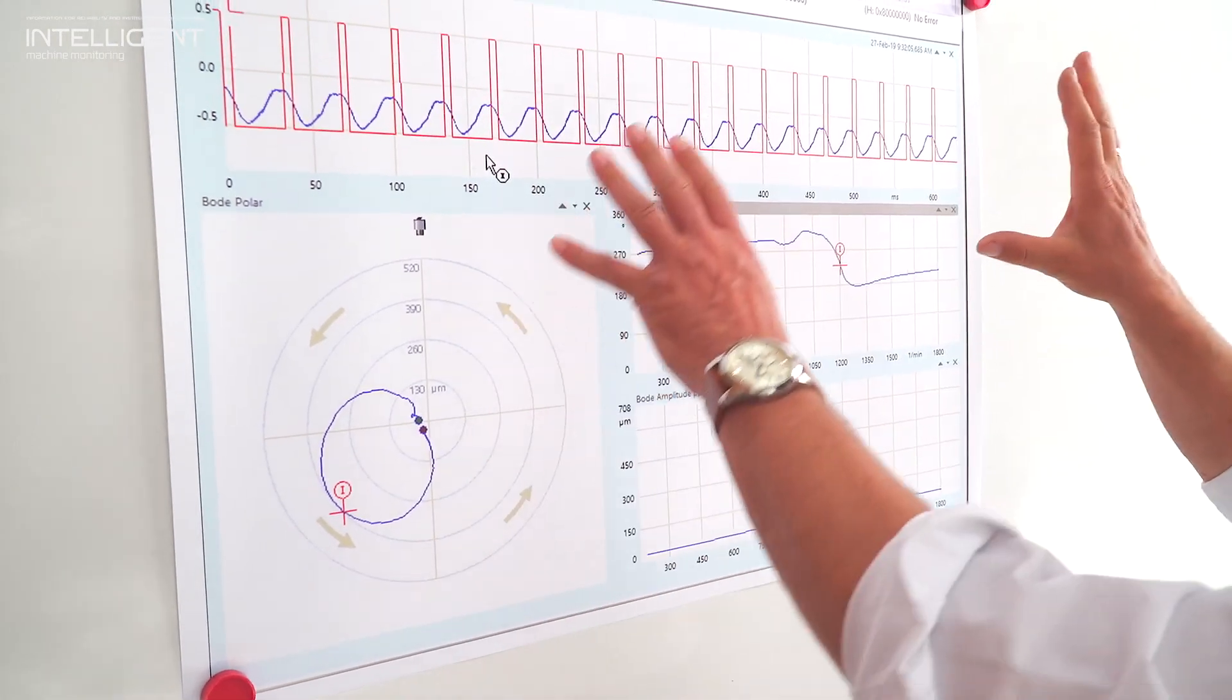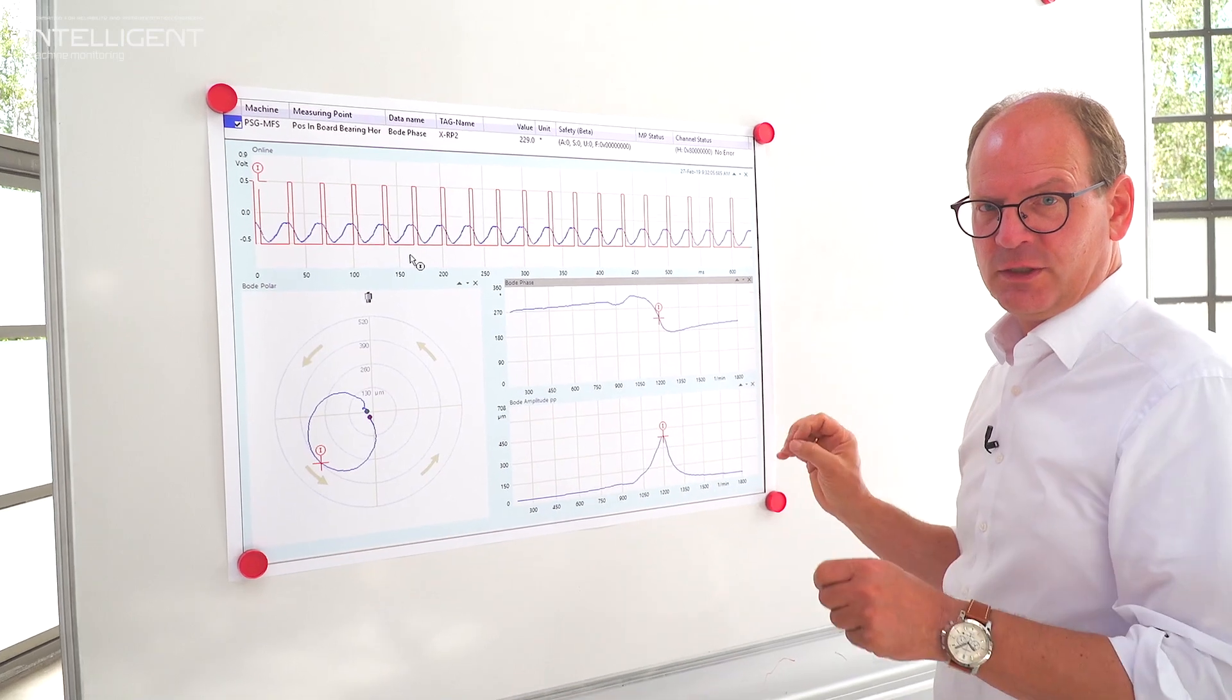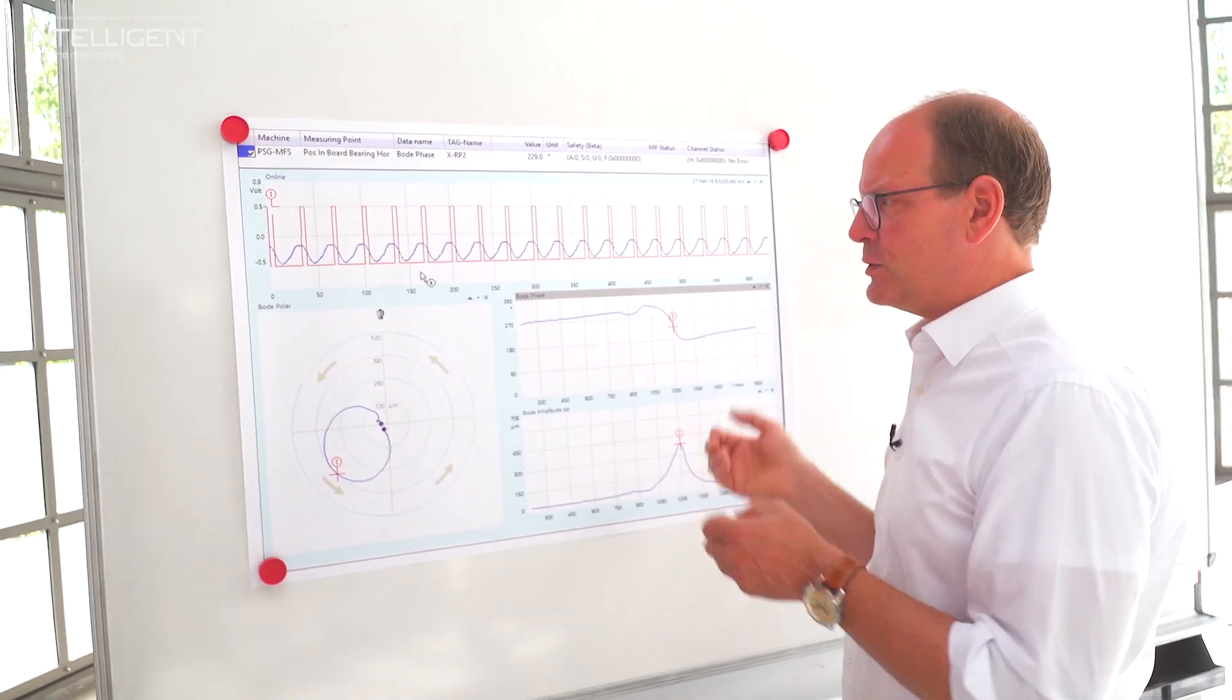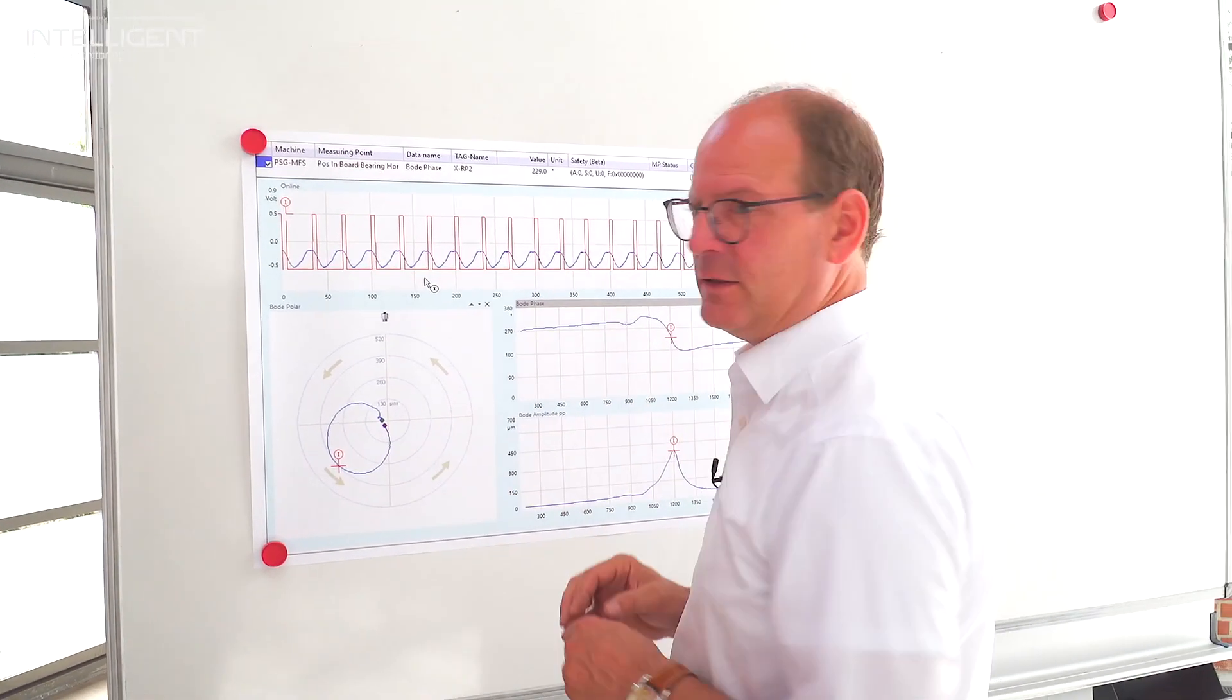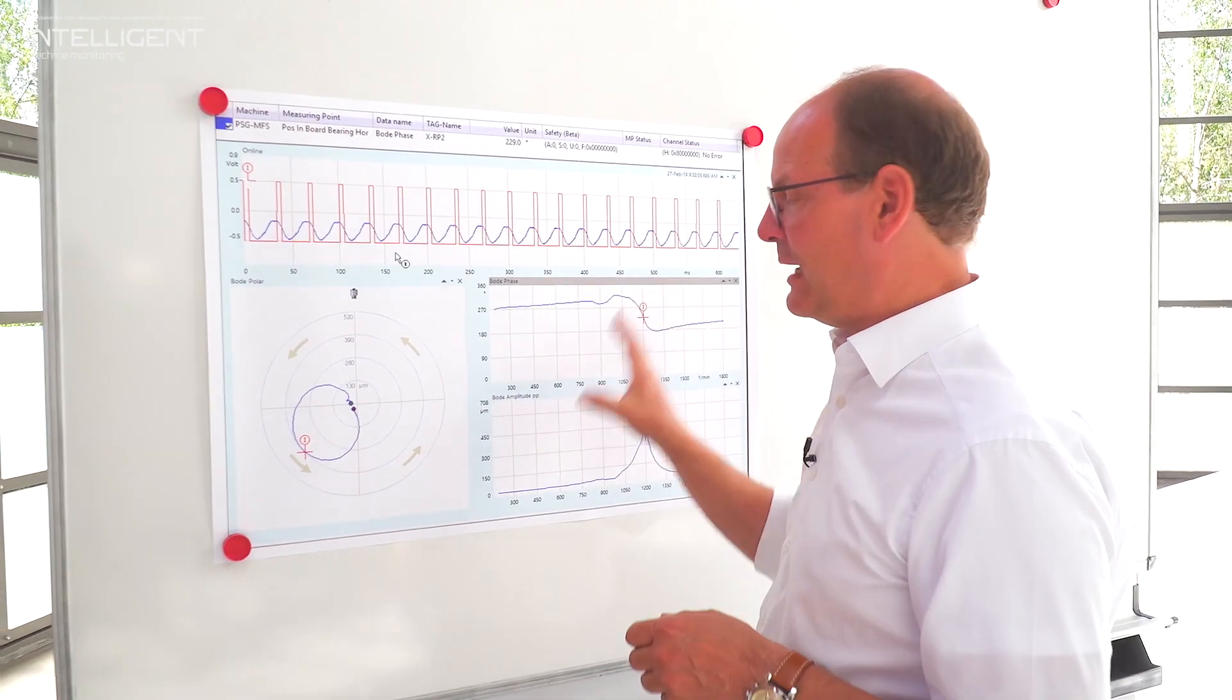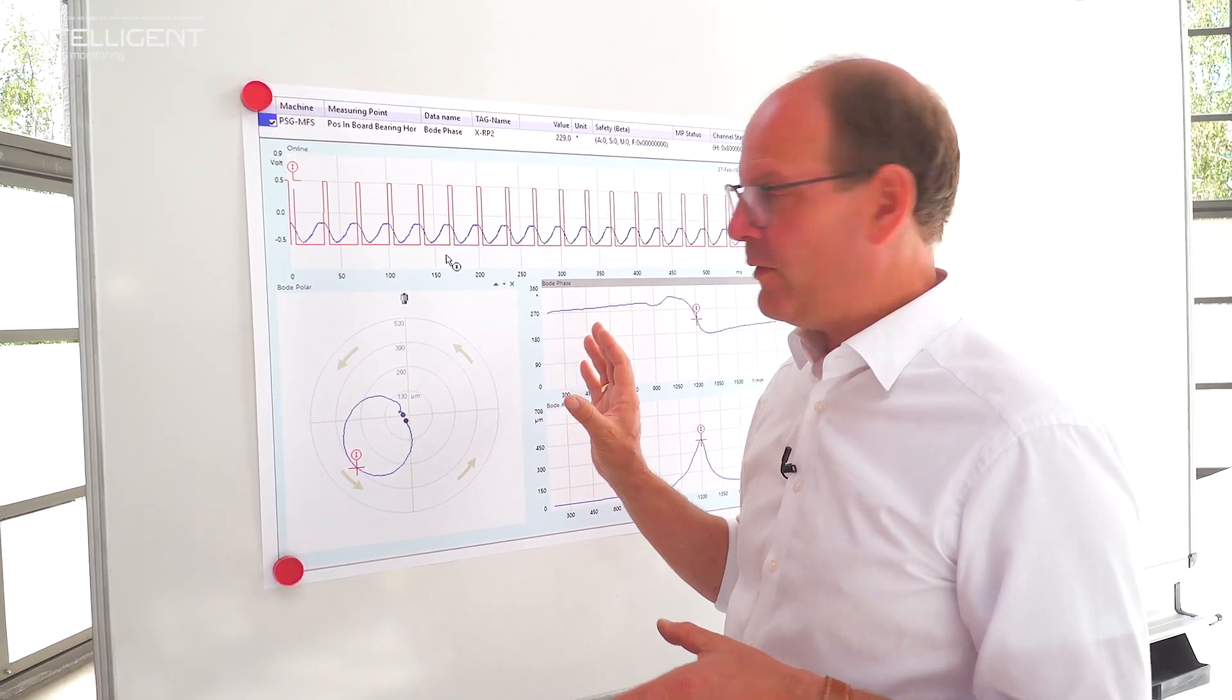This is really a very important tool to monitor and detect changing conditions during the run-up and coast-down of the machine. It's also named run-up and coast-down analysis. It's a transient tool. This Bode Polar Plot will start automatically by every start-stop or safety limit violation of the machine.